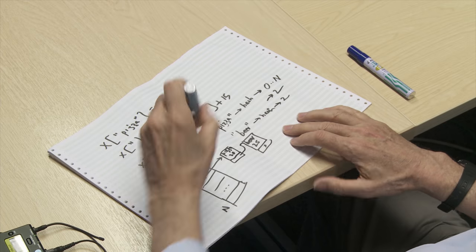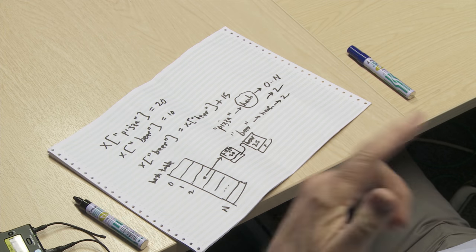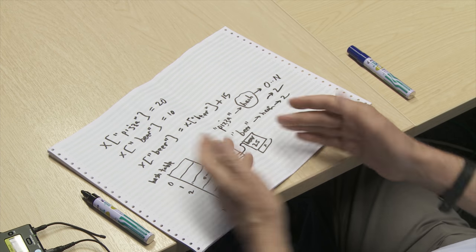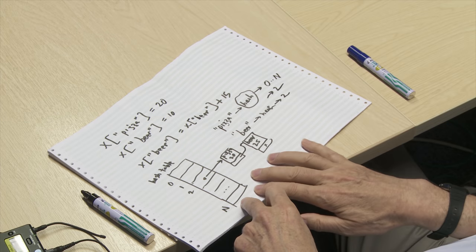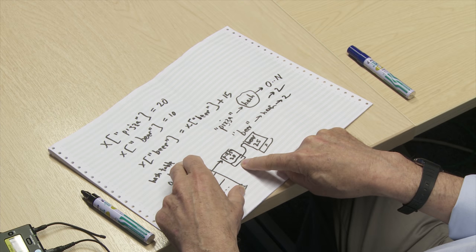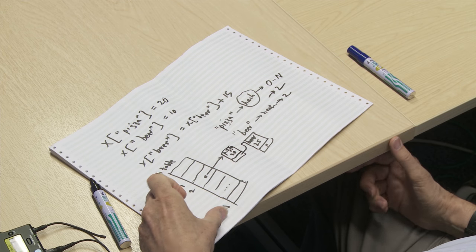The hash function must spread things like beer, pizza, coffee, and coke fairly uniformly across the table, so you don't get everything piling into one slot. Instead you get mostly short chains of roughly equal length. This means access is essentially constant time — you hash, it tells you where to go, and there's usually only one or two elements in any given chain.